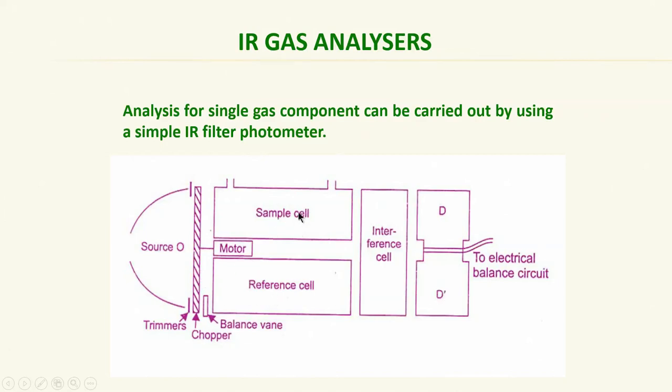I have two sample cells, this may be about 10 centimeters, 10 to 20 depending upon the analyzer sensitivity we need. I have one sample cell and one reference cell. Here I have an interference cell which also contains some of the gases that we want to eliminate that are present along with the sample. But in the interference cell there is no actual sample. These are other gases that are present in both the sample cell and interference cell.